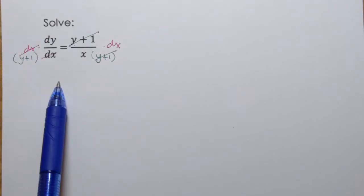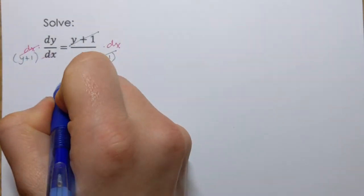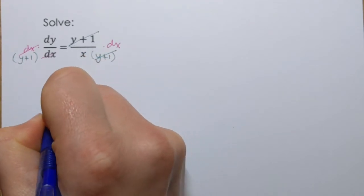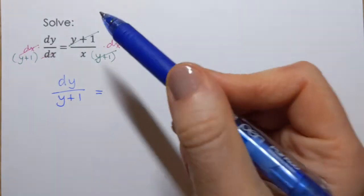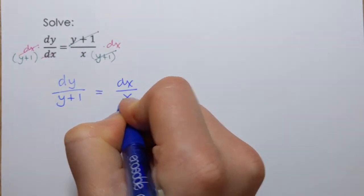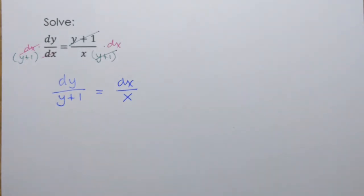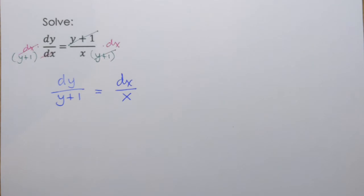So let's see what we have now. On the left it's going to be dy/(y+1) and on the right hand side I have dx/x. Just be careful putting expressions in the right spot, numerator or denominator.